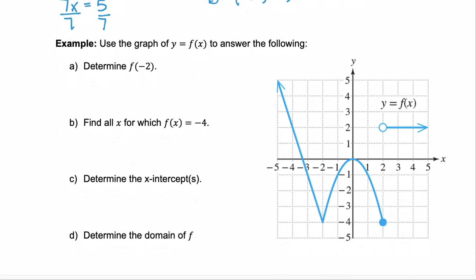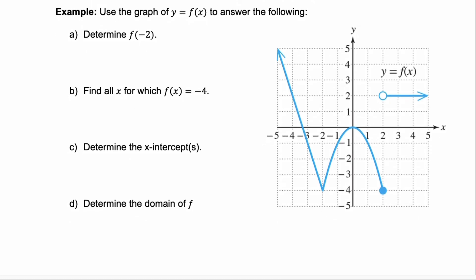Let's look at this graph of a function f of x and answer parts a through d. Part a asks us to determine what f of negative 2 is. Negative 2 is our x value, so we look at where the graph is when x equals negative 2. That point on the graph shows y equals negative 4. So f of negative 2 equals negative 4 — when x is negative 2, y is negative 4.